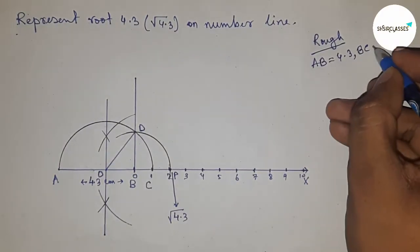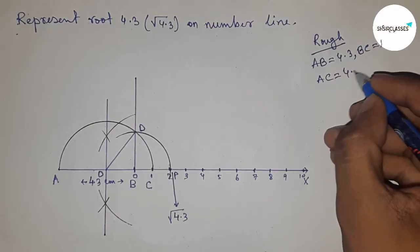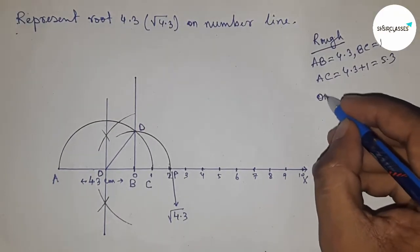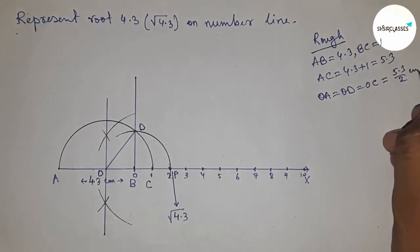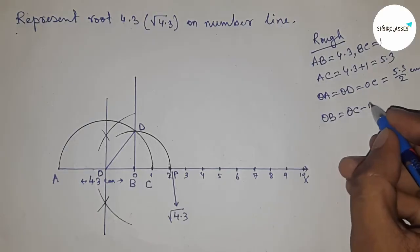Given AB equals 4.3, BC equals 1 centimeter, so AC equals 4.3 plus 1 equals 5.3 centimeters. Now radius OA, OD, and OC equal 5.3 by 2 centimeters. OB equals OC minus BC.